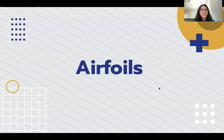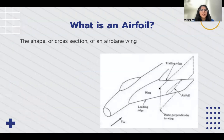Hello, my name is Asheria and today we'll be talking about airfoils. So what is an airfoil? An airfoil is the shape or cross-section of an airplane wing. As you can see in this diagram, there's a plane perpendicular to the wing and the part of the wing intersecting is the airfoil. The edge closest to the front of the plane is the leading edge and the one towards the back is the trailing edge.